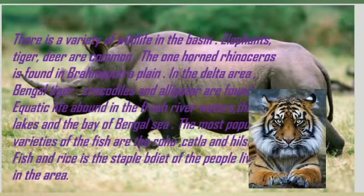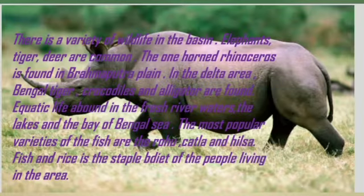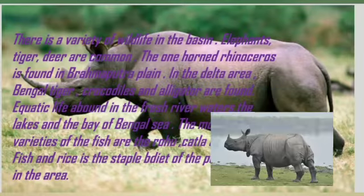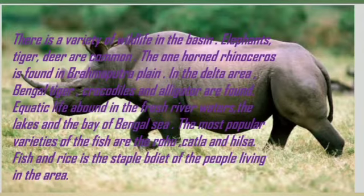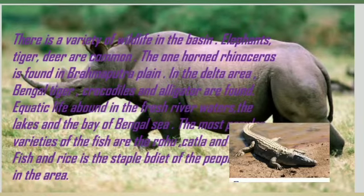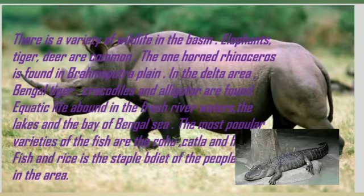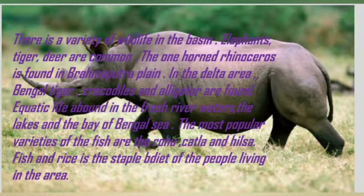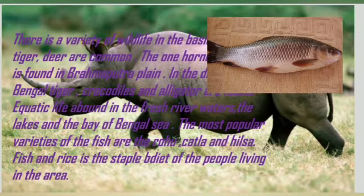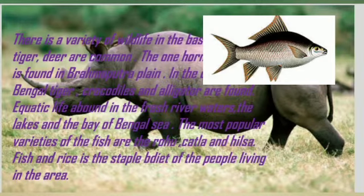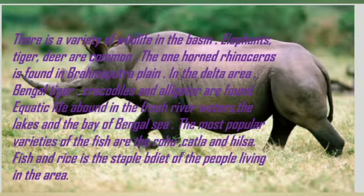There is a variety of wildlife in the basin. Elephants, tigers, and deer are common. The one-horned rhinoceros is found in the Brahmaputra Plain. In the delta area, the Bengal tiger, crocodiles, and alligators are found. Aquatic life abounds in the fish-rich waters and lakes of the Bay of Bengal. The most popular varieties of fish are rohu, katla, and hilsa. Fish and rice is the staple diet of the people living in the area.